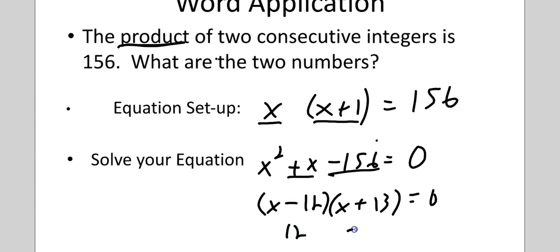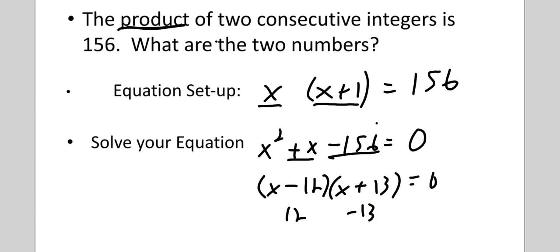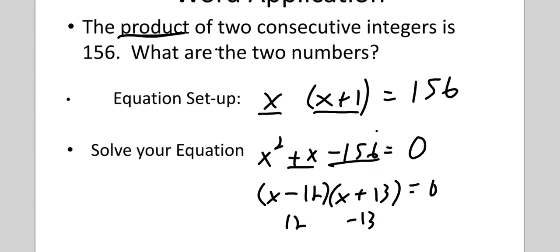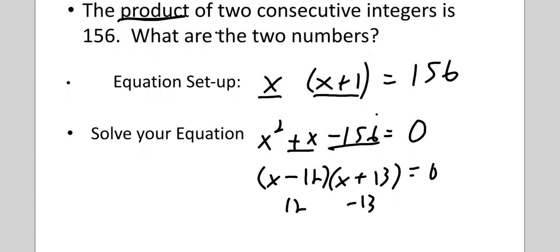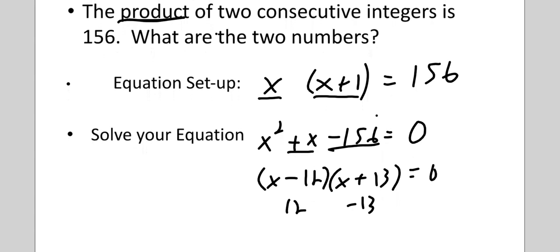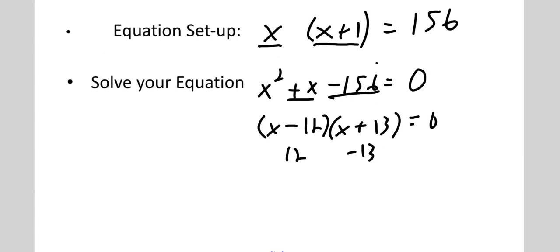And my two answers are 12 and negative 13. So, technically, it says the product of two consecutive integers. It doesn't say positive or negative. So, technically, they both work. 12 and 13, and negative 13 and negative 12. Because these are both consecutive sets of numbers.